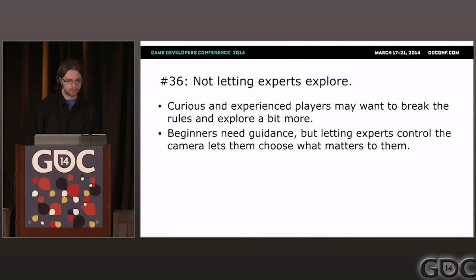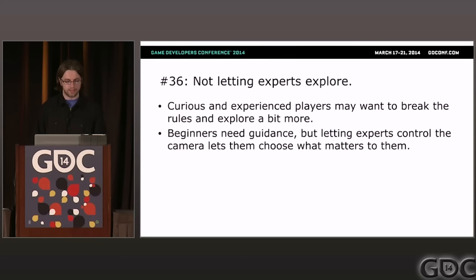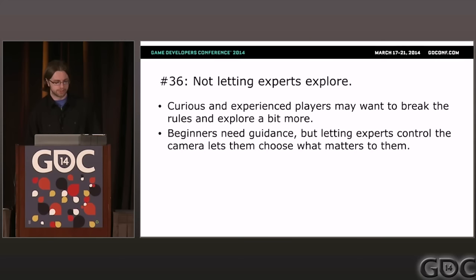Problem thirty-six: not letting experts explore. Even if the player is technically in control of the camera, overbearing hints that constantly try to get them to go in a different direction can be frustrating — especially when experts are replaying a game. After the hints have helped players establish their goals, the hint can be disengaged to allow the player to find their own way to get there.